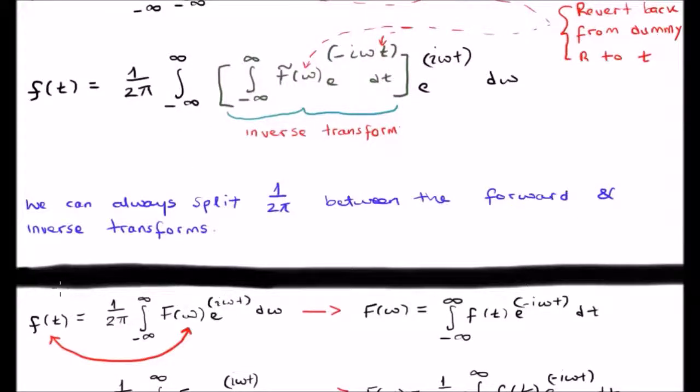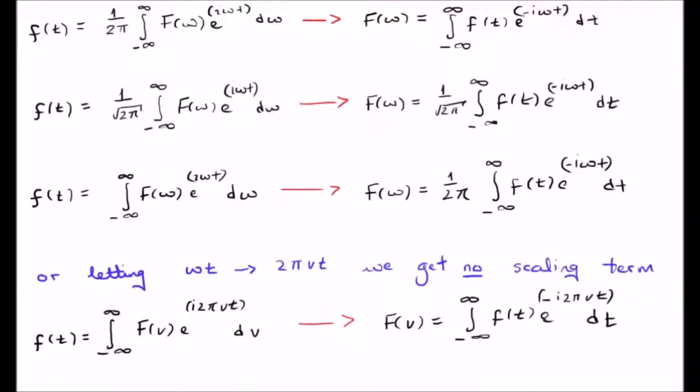we can rewrite both the forward and inverse transforms using a single equation, something like I have here on the top. There is usually only one corresponding F of omega for a small f of t. And that's why, like I said, they're known as a Fourier transform pair.